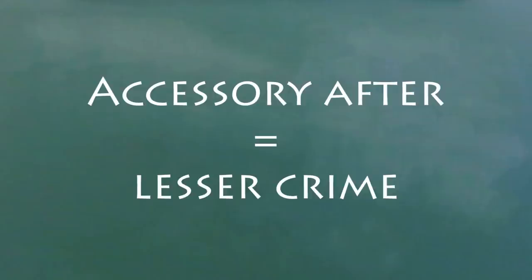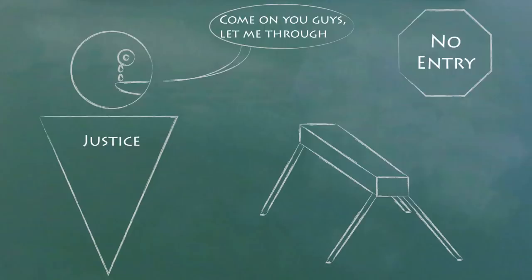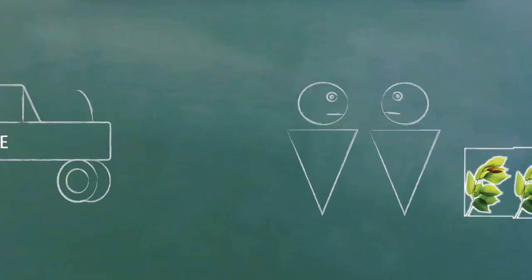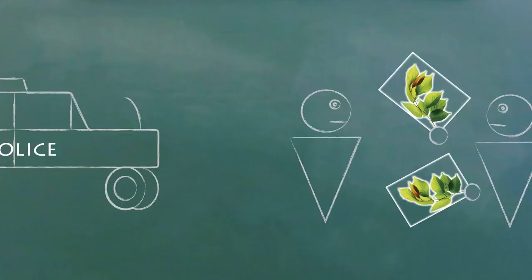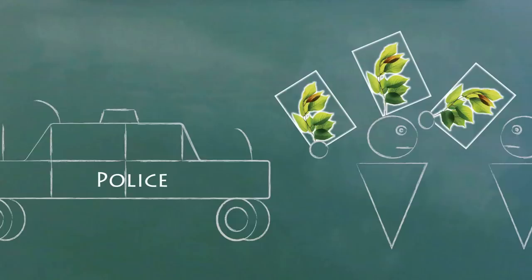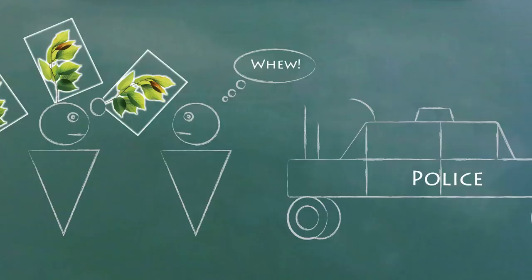Some places have merged this crime with the broader crime of obstructing justice. Basically, to be an accessory after the fact, you need to help someone who committed a felony, a category of more serious crimes. The difference is that the help comes after the crime has been completed. This usually means after the criminal has left the crime scene. So hiding someone or lying to the police would both count.